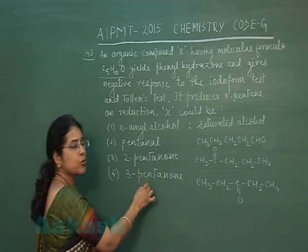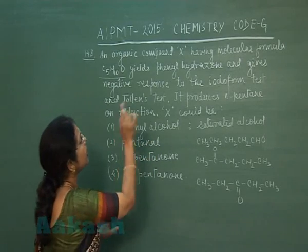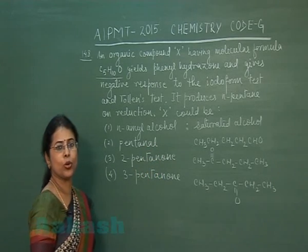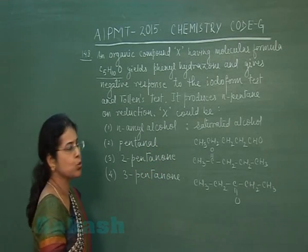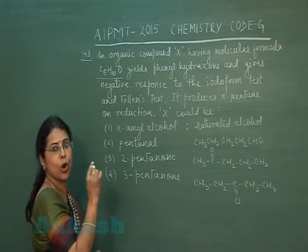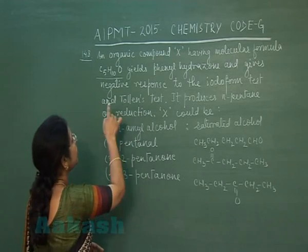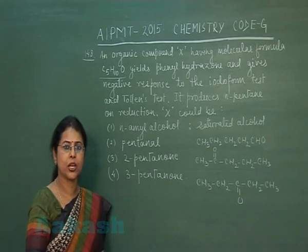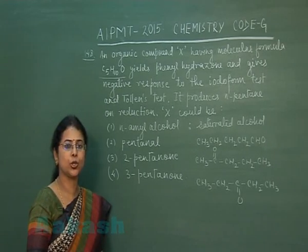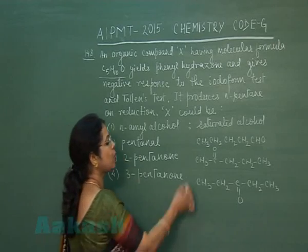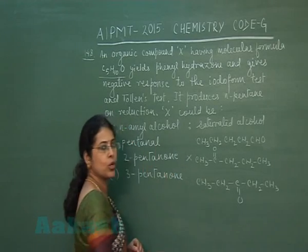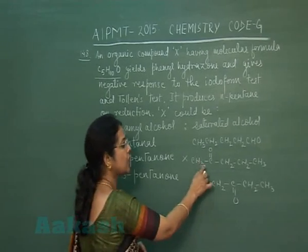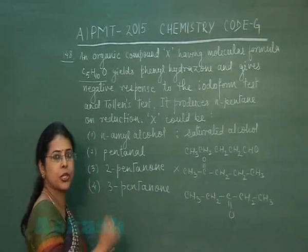From the remaining three options, we need to select the answer. The compound yields phenylhydrazone — all aldehydes and ketones form phenylhydrazone, so any of the three remaining options could apply. It gives a negative response to the iodoform test. Iodoform test is given by methyl ketones. Since the response is negative, the compound cannot have a methyl ketone structure. So 2-pentanone is eliminated.